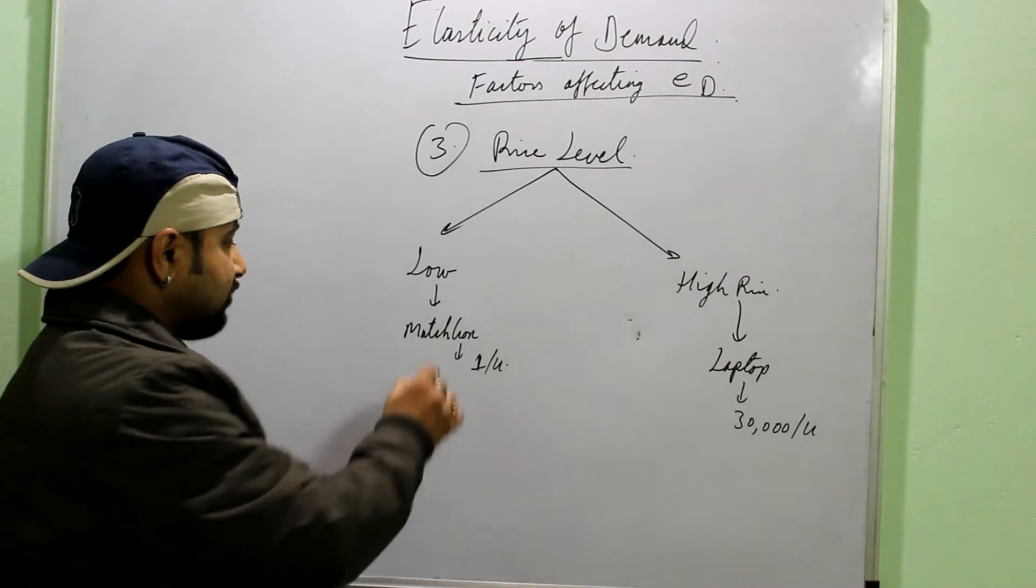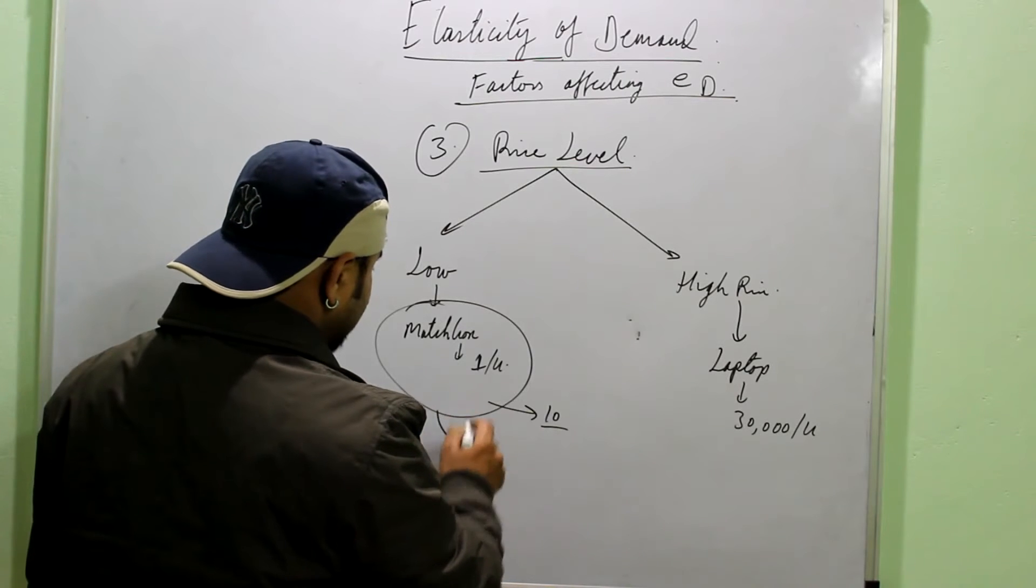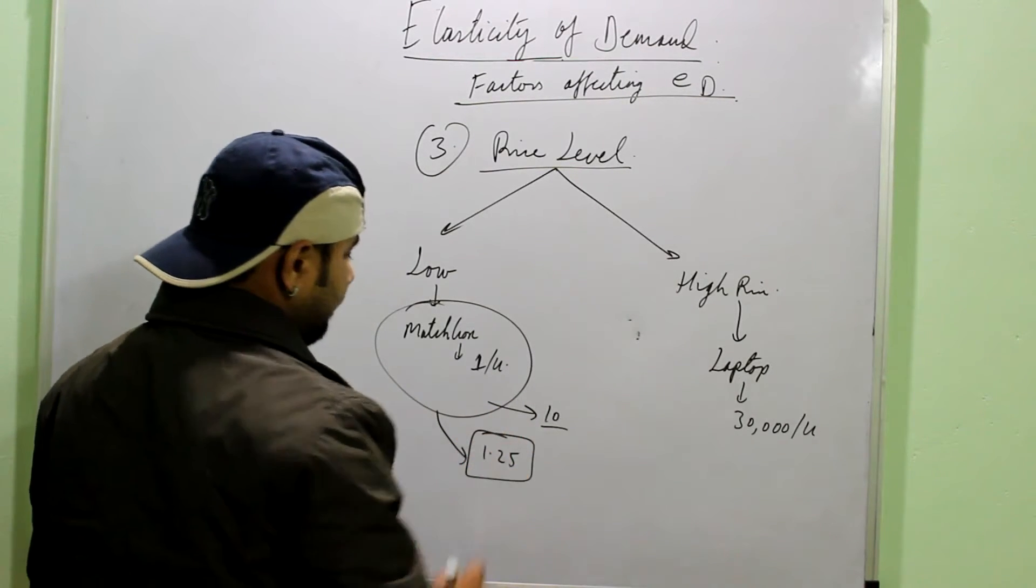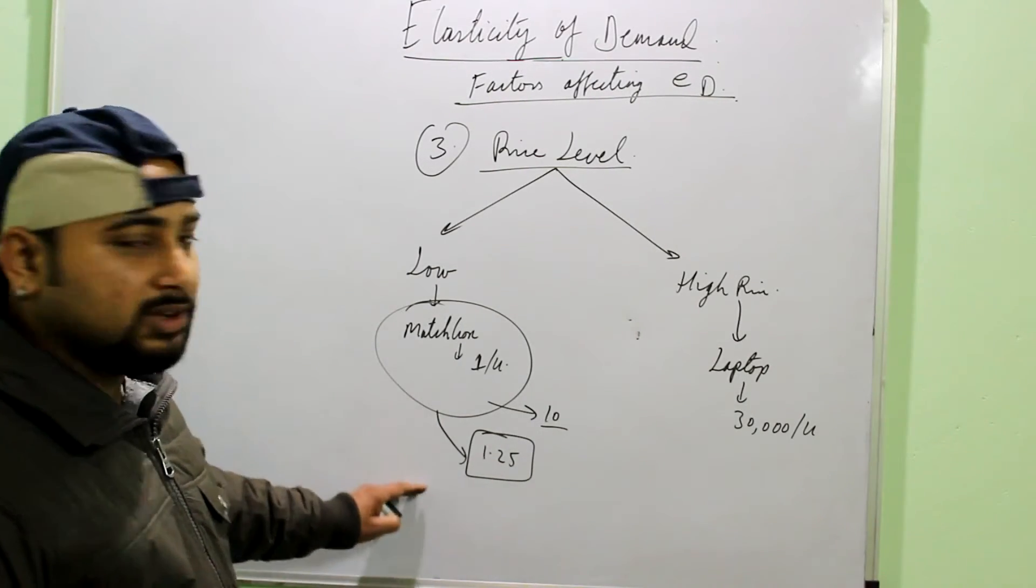So, if the price of the matchbox rises, suppose you are using 10 units. In a month, even if the price rises, becomes 1.25. So, not affected. Consumer's budget is not affected. Because the price range of the commodity is very low.